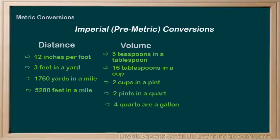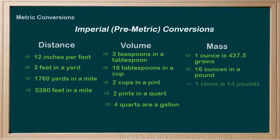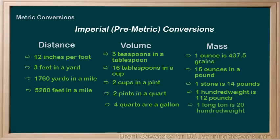And if you wanted to convert measurements relating to mass, you had to remember 1 ounce is 437.5 grains, 16 ounces to a pound, 1 stone is 14 pounds, 100 weight is not 100 pounds but 112 pounds, and 1 long ton is 20 hundred weights.